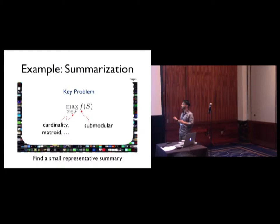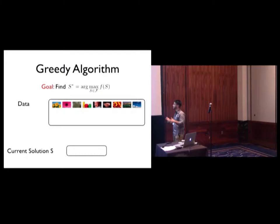So the key problem we are interested in here is we want to maximize a submodular function subject to some constraint. So what are known algorithms, or how can we go about solving such problems?